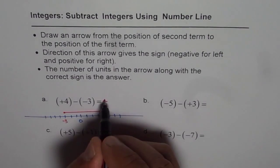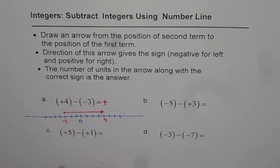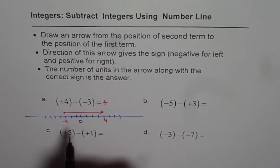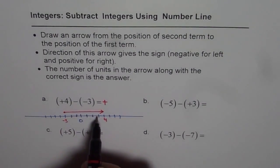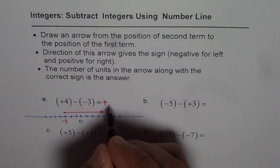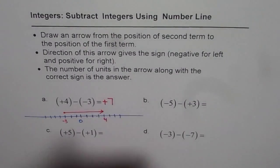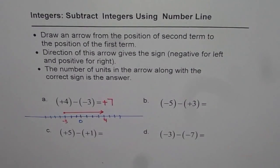Since the arrow direction is positive, we get a positive answer. Count the units: one, two, three, four, five, six, seven units. So when you take away minus three from plus four, you get plus seven.